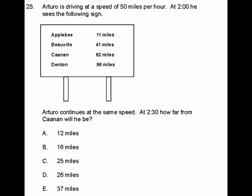This is problem number 25 on the California CBEST Practice Exam Mathematics section. Arturo is driving at a speed of 50 miles per hour. At 2 o'clock he sees the following sign.